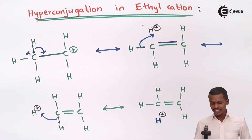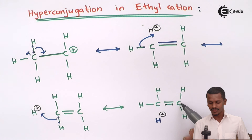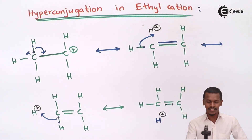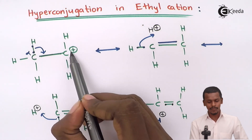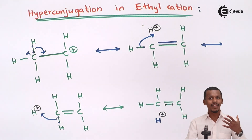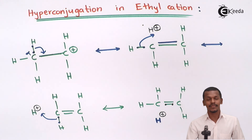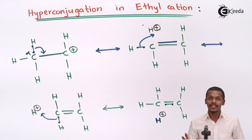The process continues by moving these two electrons towards the hydrogen, making that carbon positive again. This kind of delocalization goes on continuing, and hence we can say that the ethyl cation is more stable. Suppose this carbon is the positive one — we can stabilize it by electrons, because the methyl group attached here is known to give its electrons. Methyl groups show a +I effect and give their electrons to the center with positive charge.